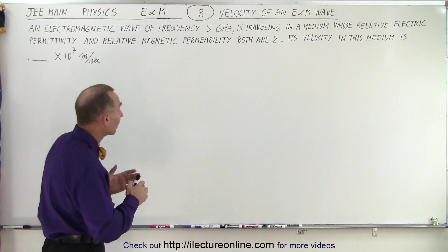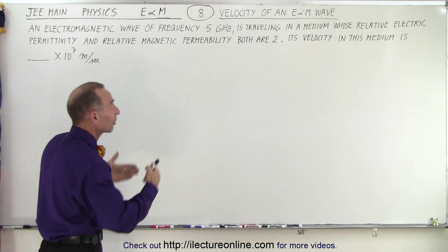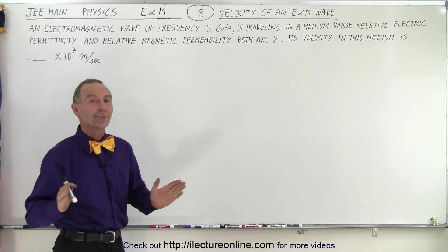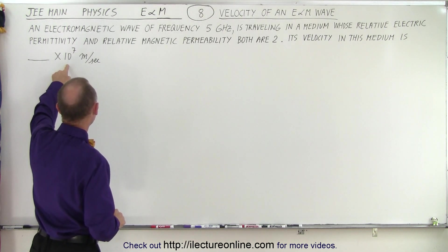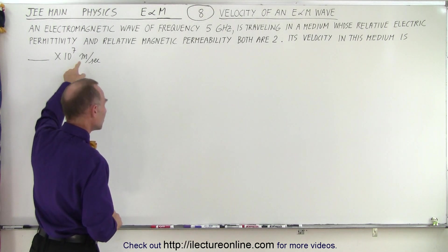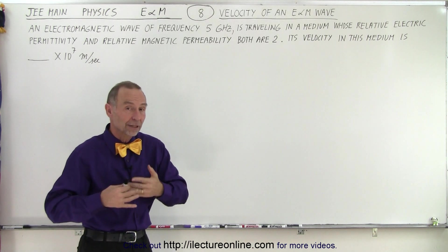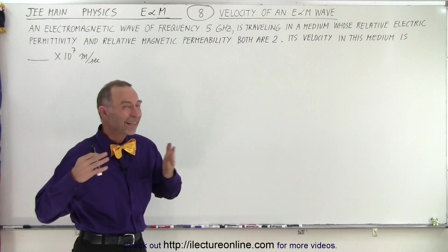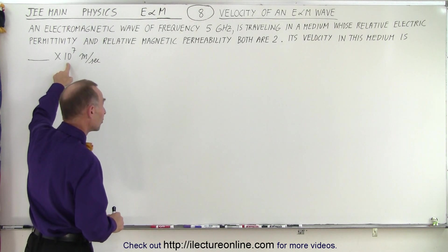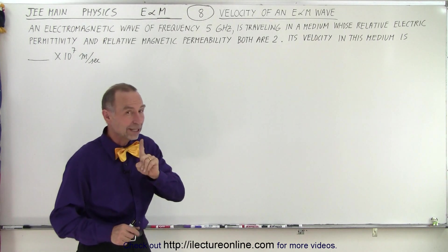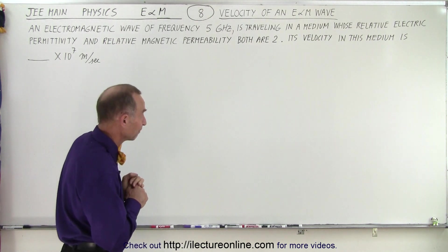First of all, the fact that they give us the frequency of 5 gigahertz has absolutely no bearing on the problem at all — it's kind of confusing. Also notice they use 10 to the 7 meters per second, whereas typically the speed of light is 10 to the 8 meters per second, so we'll have to make some unit conversion. This is very tricky, because if you don't do that you'll get it wrong even though you did the problem correctly.